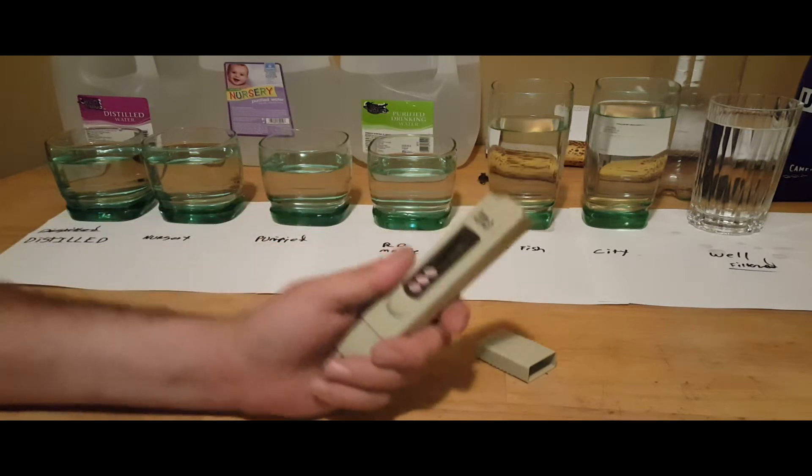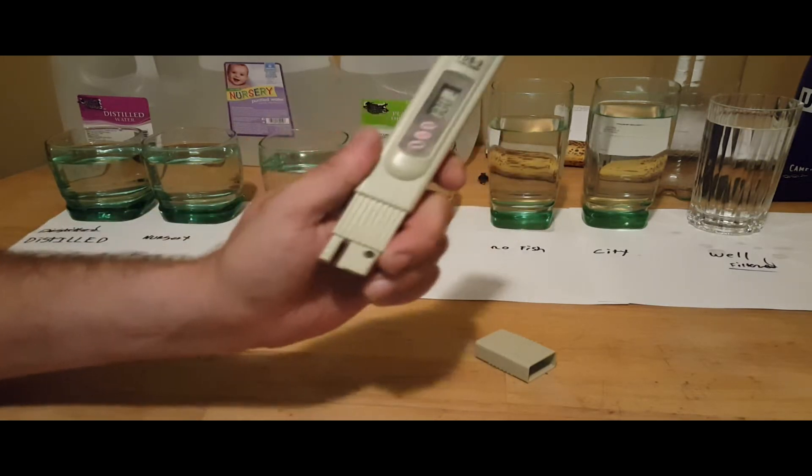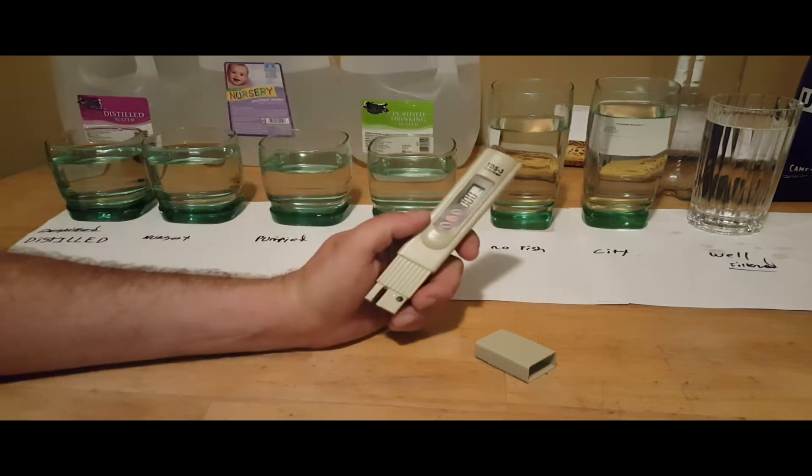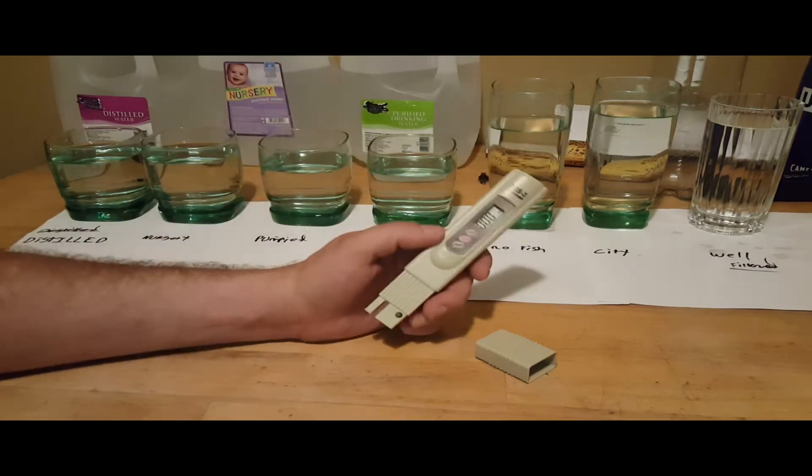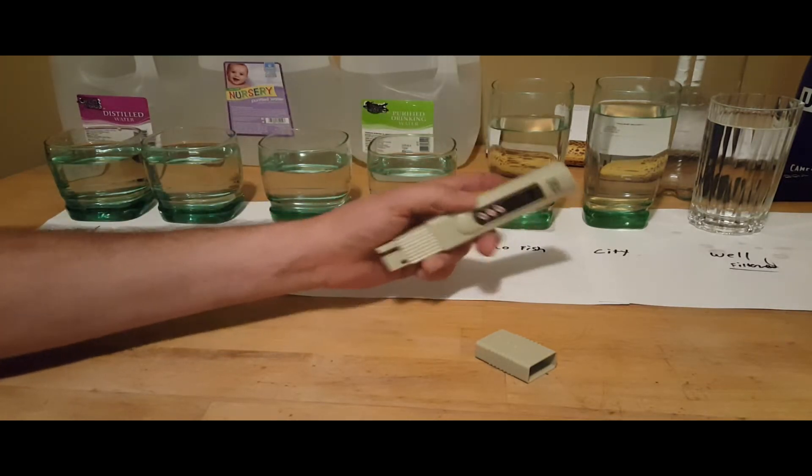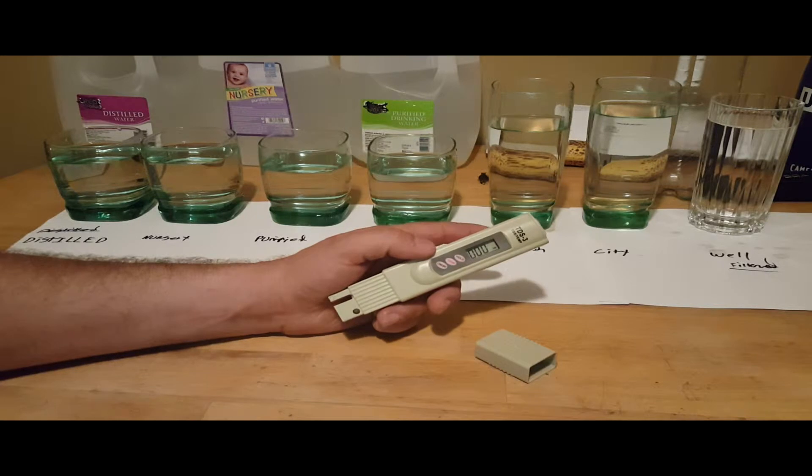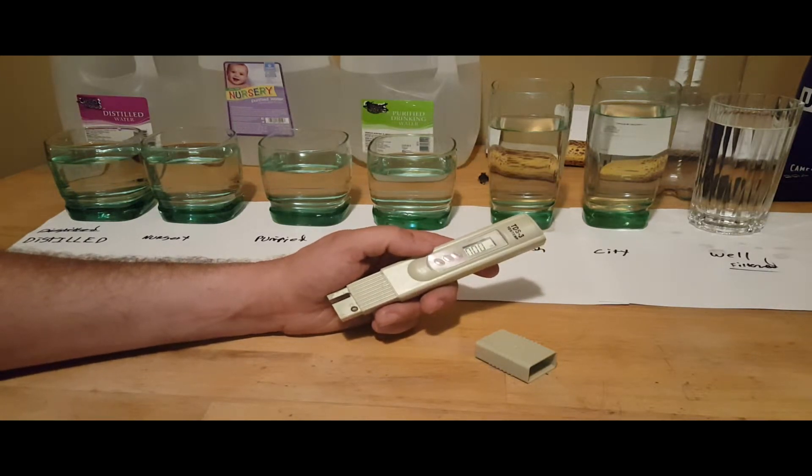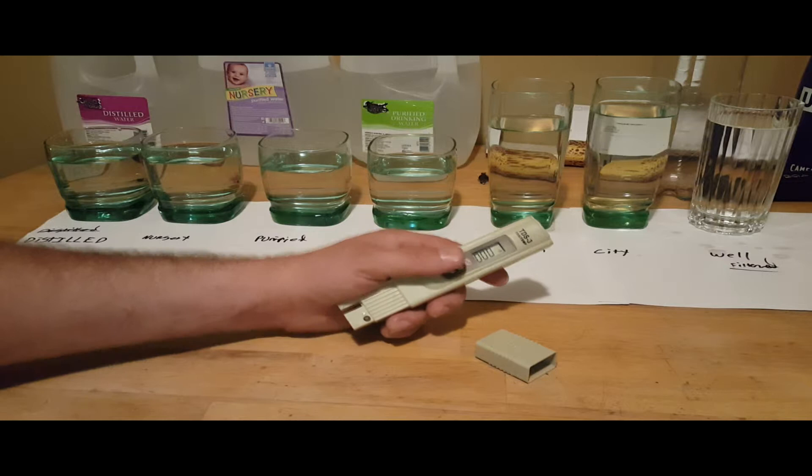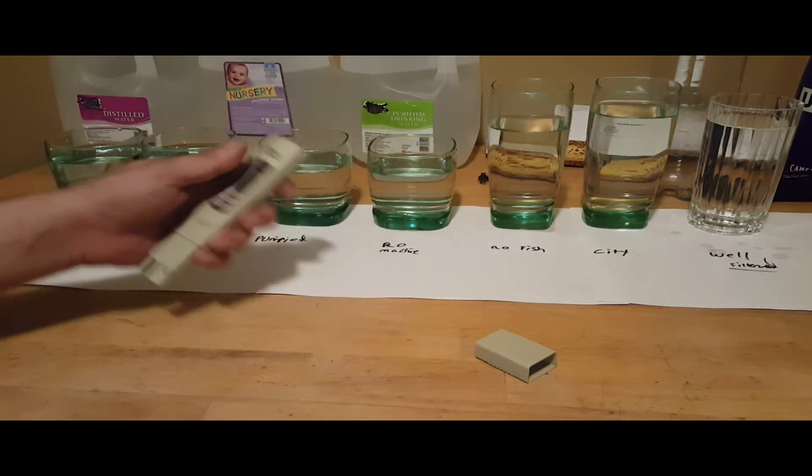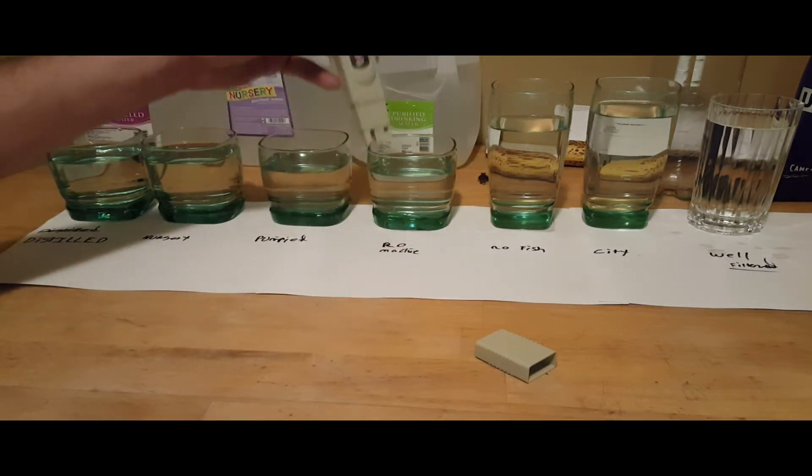They usually don't mind if you have a TDS meter, take it with you, or they've got one there usually and can show you how clean their water is. This is going to cost you about 25 to 50 cents a gallon for fresh water from a fish store, depending on the store.